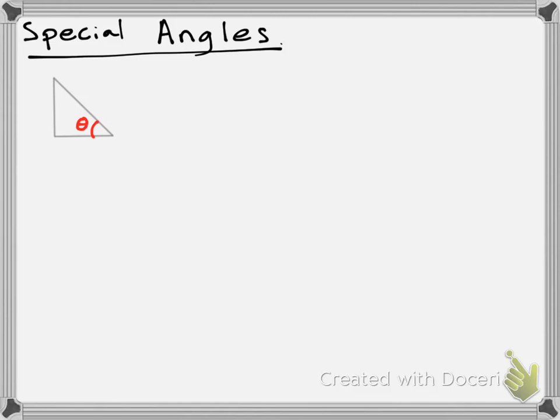There was the sine, cosine, and tangent ratio. And the ratios could be memorized by SOH-CAH-TOA. SOH means sine equals opposite over hypotenuse. CAH means cosine equals adjacent over hypotenuse. TOA means tangent equals opposite over adjacent.